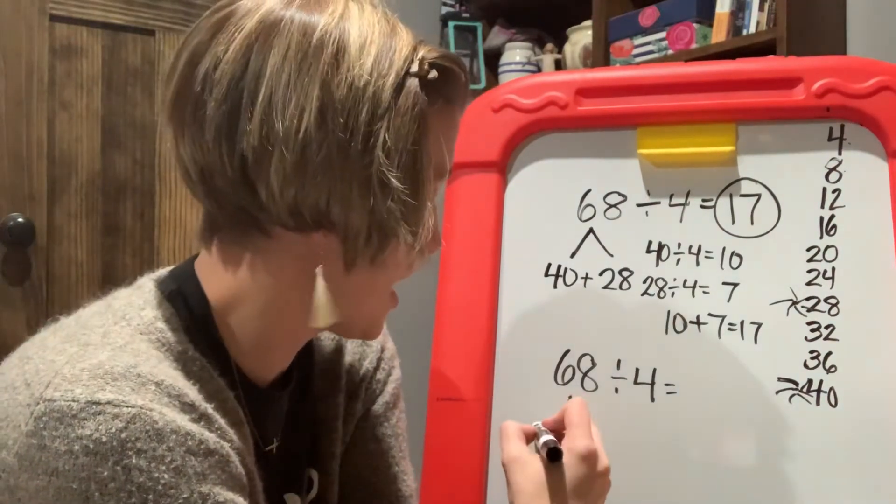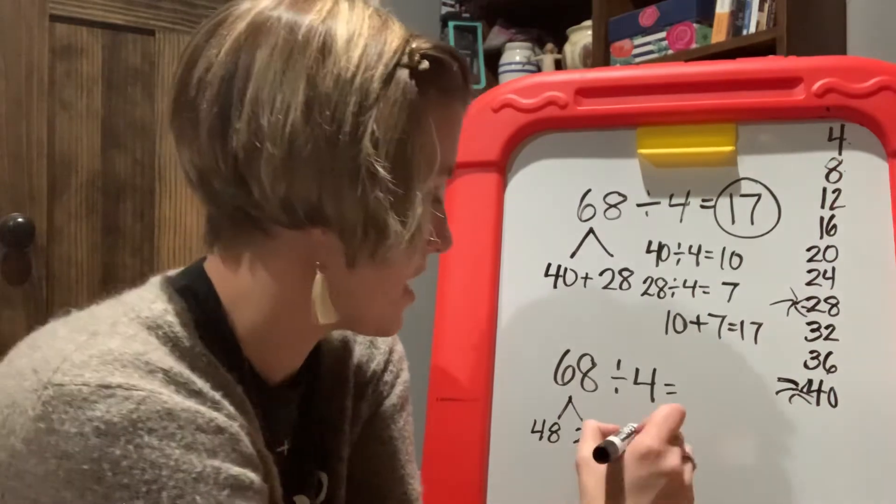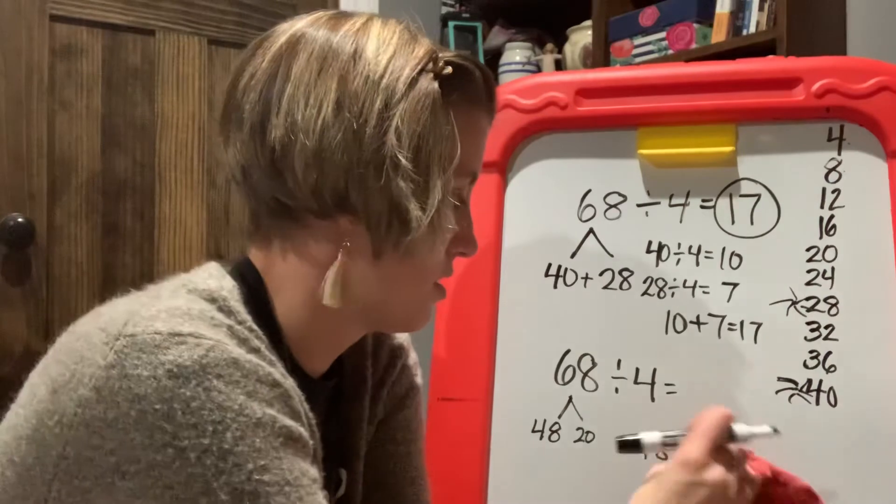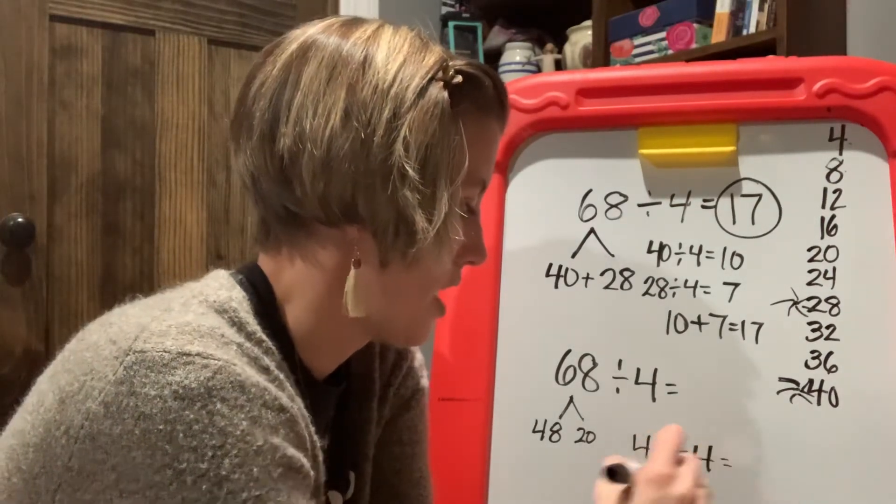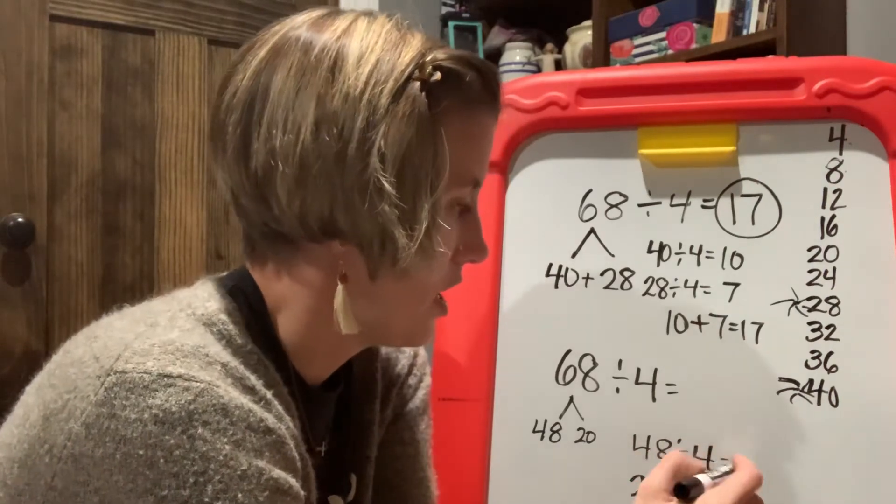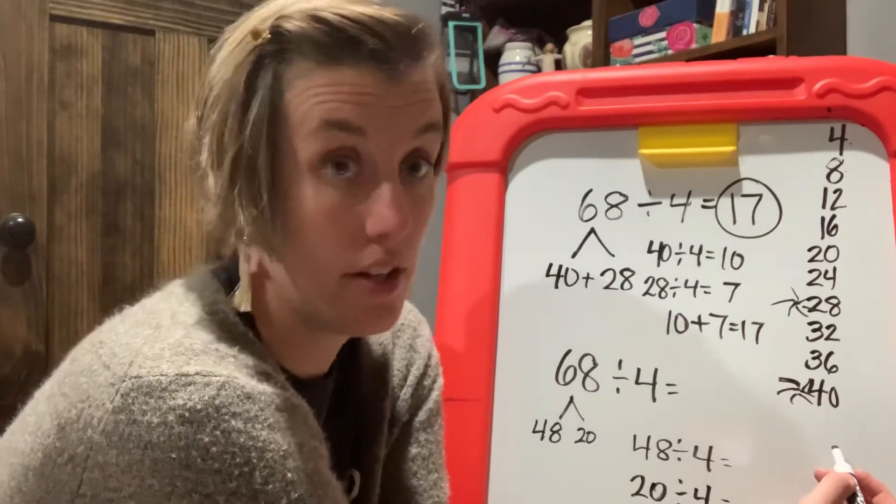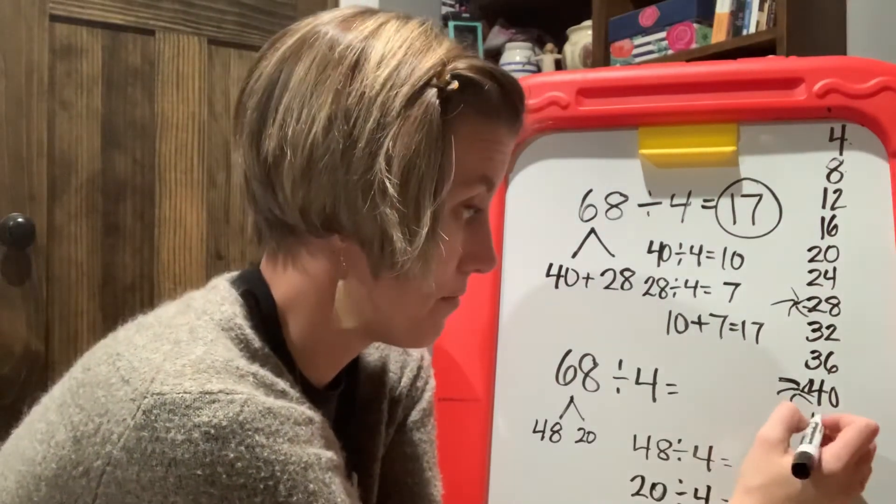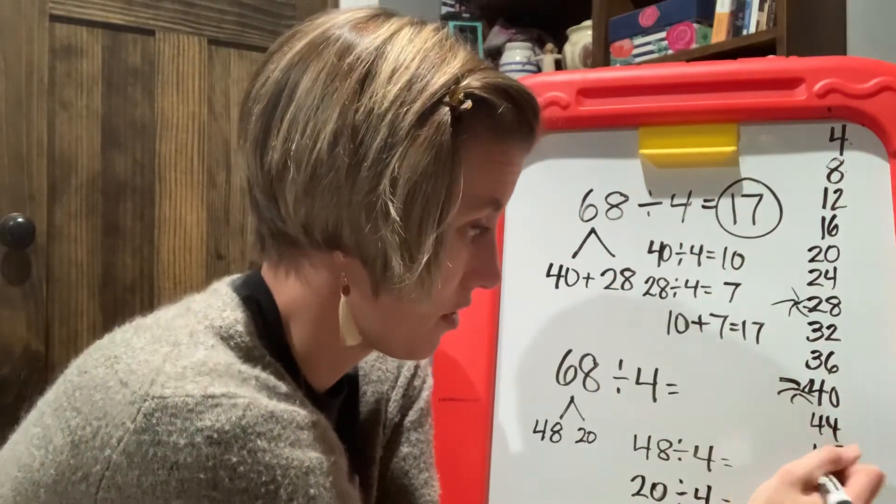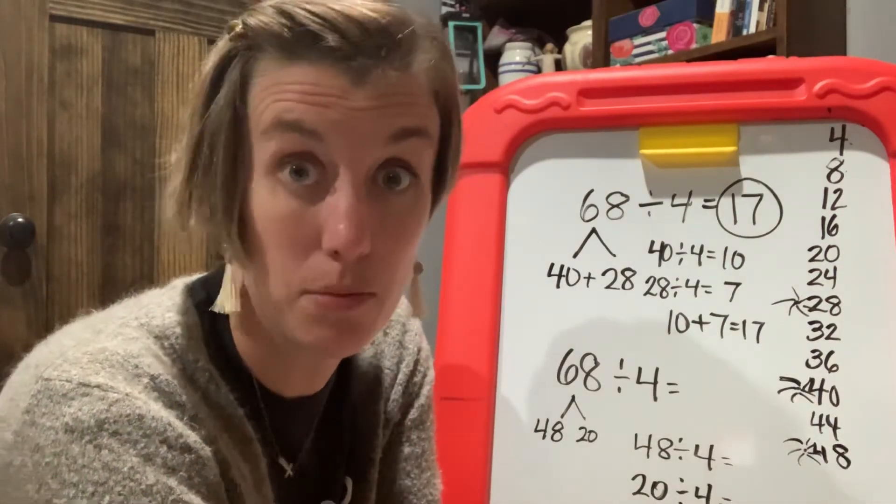Let's distribute the 68 by 48 and 20. 48 divided by four and 20 divided by four. If we keep going here, we can count up by fours. 40, 1, 2, 3, 44, 45, 46, 47, 48. We've hit it again. We've hit it. We've hit it. We've hit another multiple of four.